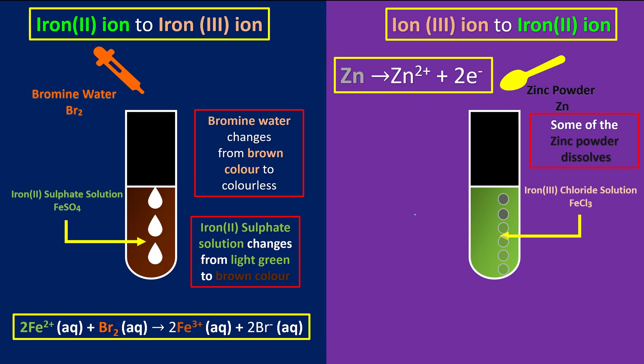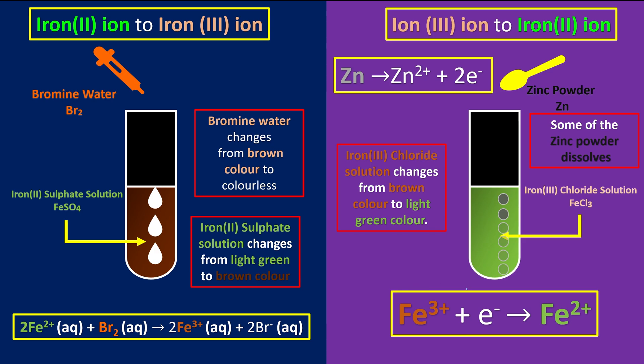But at the same time, the iron(III) chloride will change from brown to light green. This indicates that eventually the iron(III) ion changes to become iron(II) ions. This is why the color changes from brown back to light green.